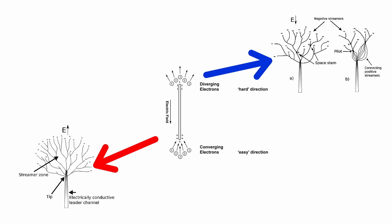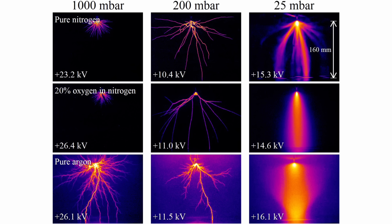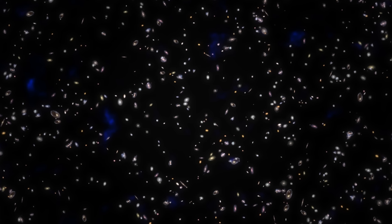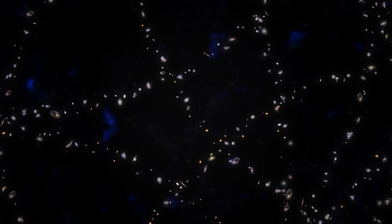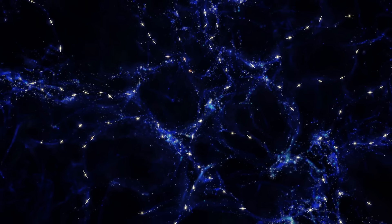This is why in the lab we cannot directly image a discharge running in dark mode. The filamentary structure is still there, but without collisions to produce light, it is invisible to our instruments. To actually see the finer structure, we have to push the discharge into glow or arc mode, lighting it up. The same is true in space. The vast networks of filament may be running in dark mode most of the time, weaving the hidden circuits of the universe unseen.